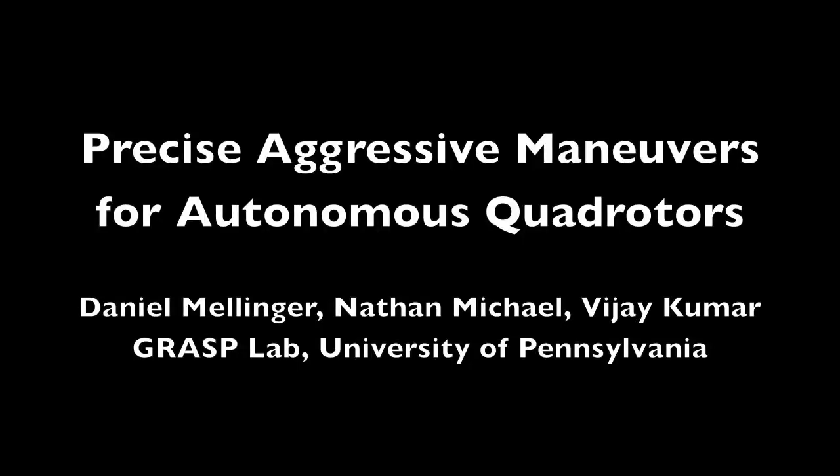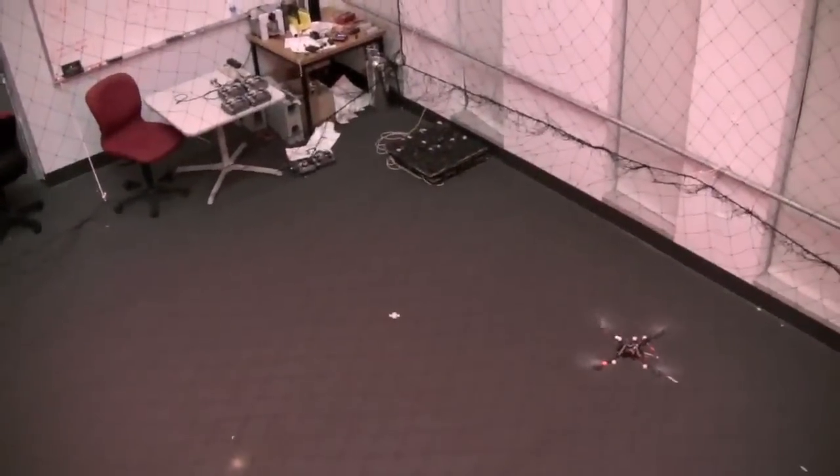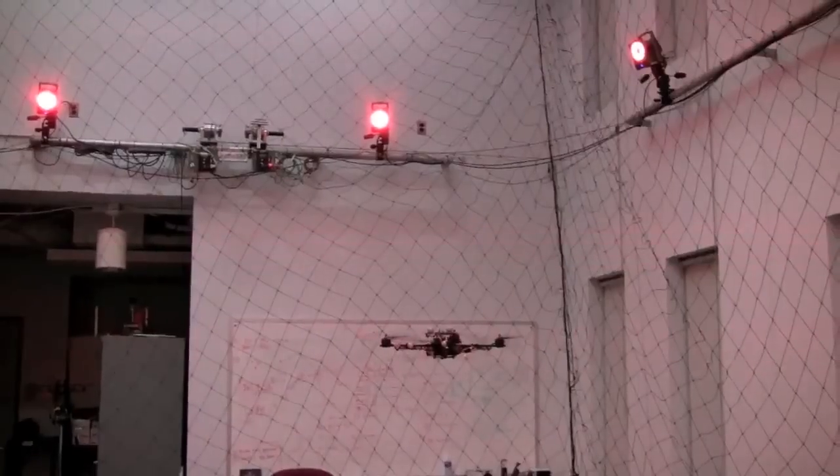This video presents autonomous control capabilities for a quadrotor helicopter. We use a 20-camera Vicon system and an onboard IMU for state estimation. Here we show single, double, and triple flips.